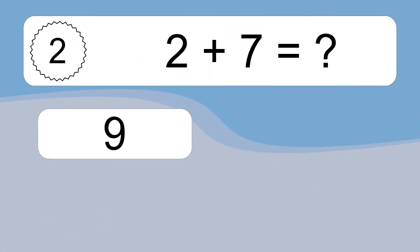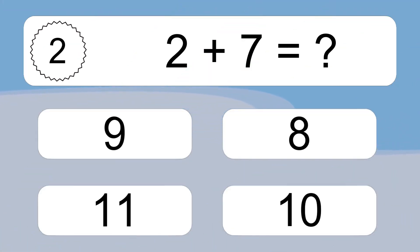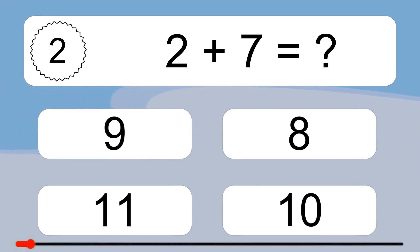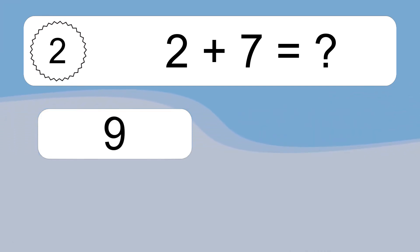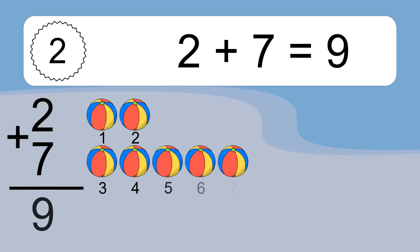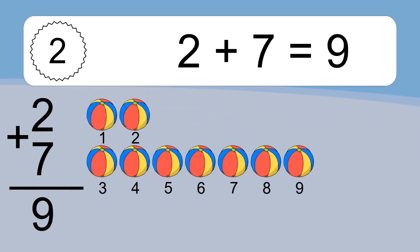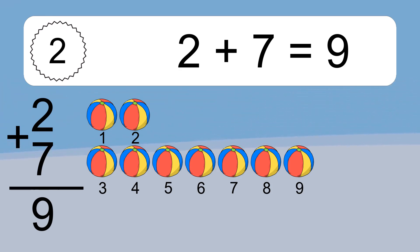2 plus 7 equals what? 2 plus 7 equals 9. Let's count it: 1, 2, 3, 4, 5, 6, 7, 8, 9.